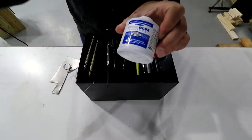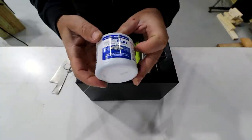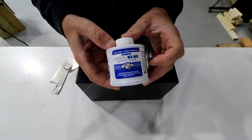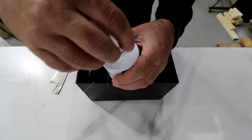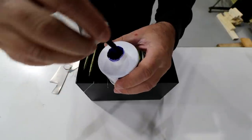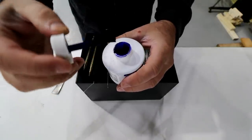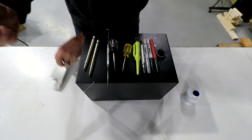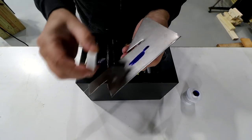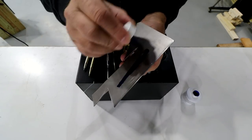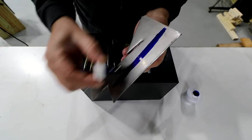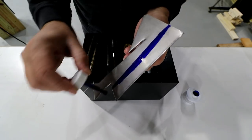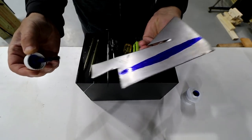This is Dykem layout fluid. Basically it's just some blue dye. You can get different colors, I think you can get it in red as well. It comes with a brush and then you can just take this stuff, you basically just paint it on whatever surface that you're going to mark, you're going to do your precision marking with.